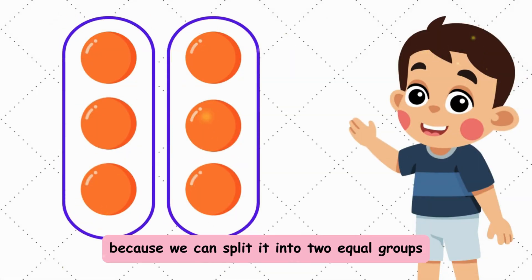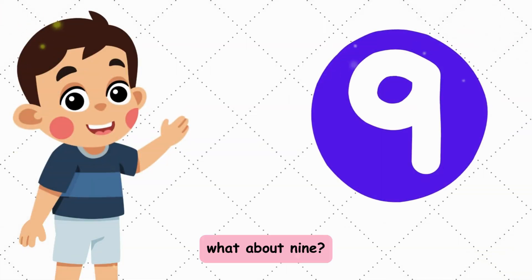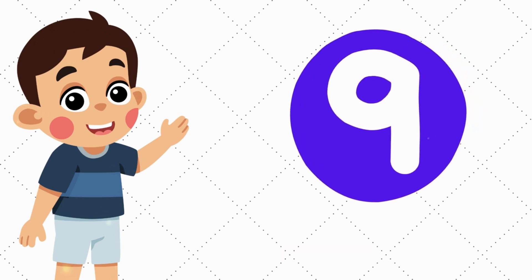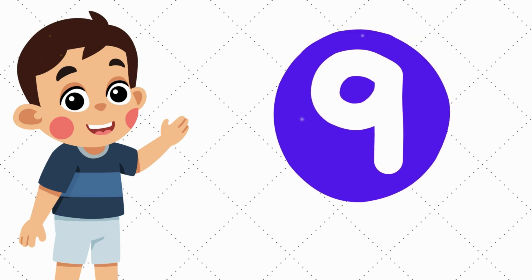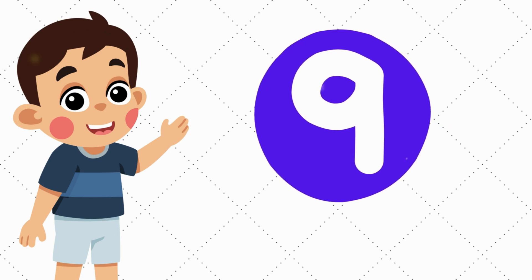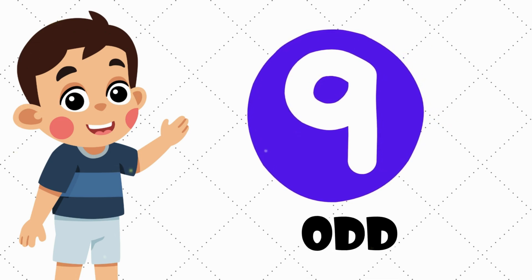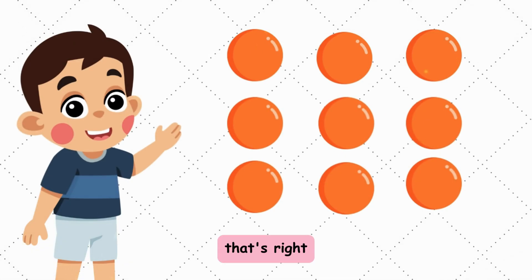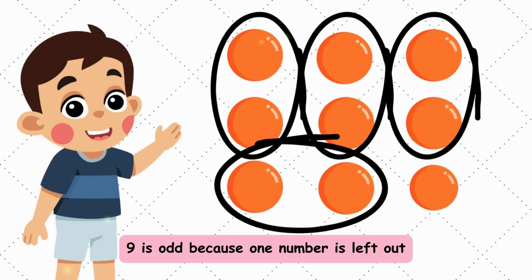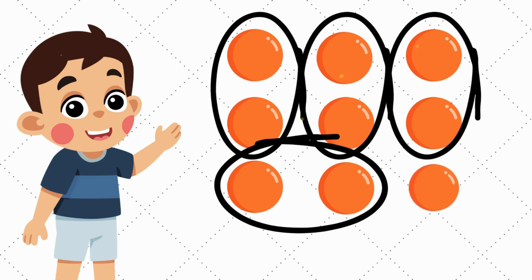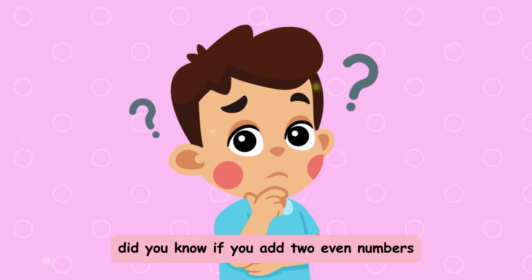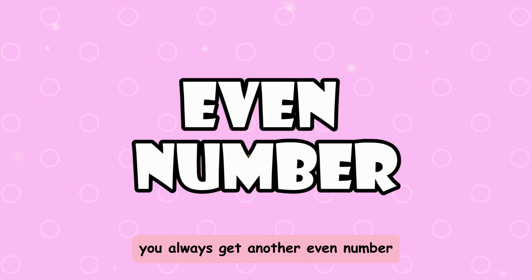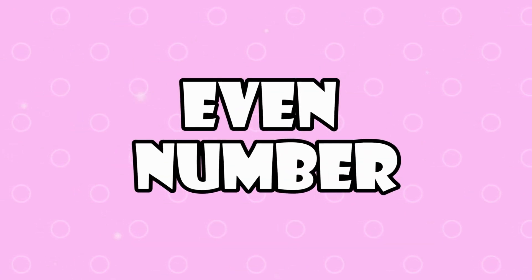What about nine — even or odd? Correct! That's right, nine is odd because one number is left out. Did you know if you add two even numbers you always get another even number? Let's try!